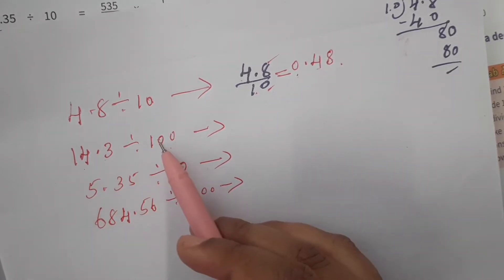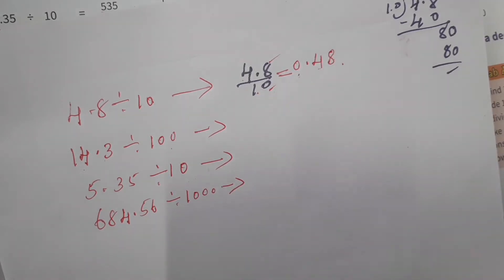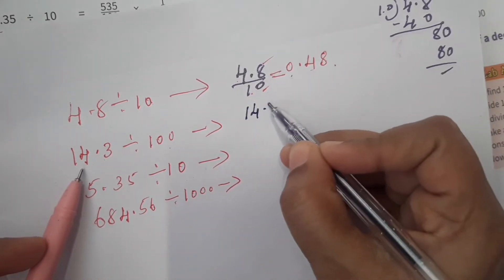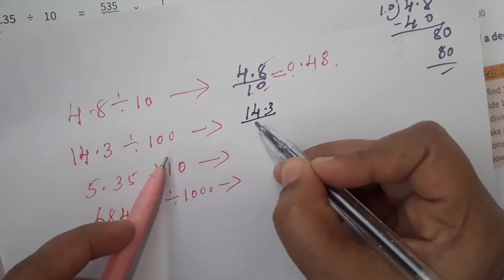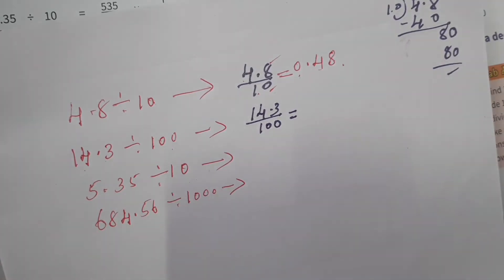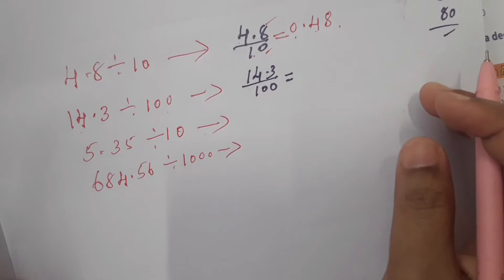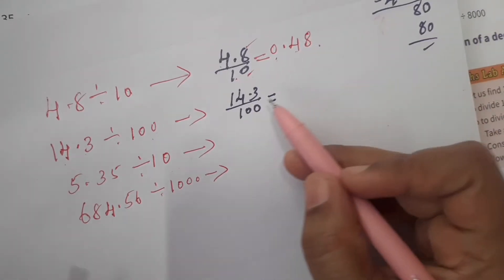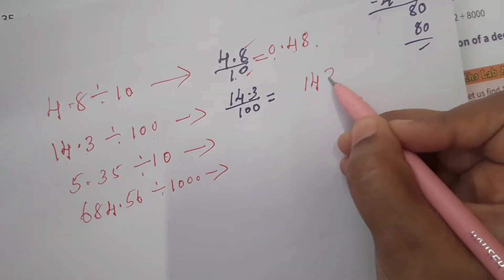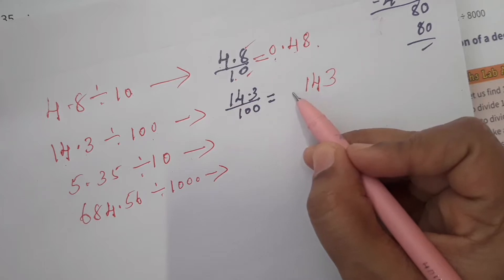14.3 divided by 100. Using the shortcut method: write the numerator 143 (ignoring the decimal point). Leave a little space to write the answer.